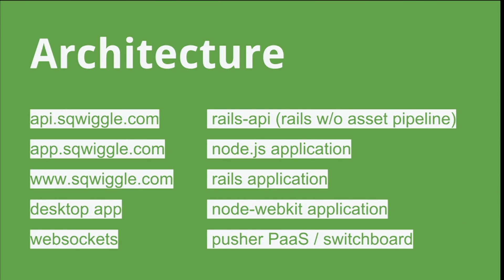We also have a desktop app. For that, we used a project called Node WebKit. Basically, it wraps a WebKit process and a Node process into one, so you can access Node functions from within a WebKit instance — you have a browser and you can access the file system — and then it puts that inside a cross-platform desktop application wrapper. So we have a desktop application that's actually running WebKit, and we can do native things like pause your music player when one of those instant video calls comes in, auto-updating, real desktop notifications — all that type of thing. Node WebKit's been a real lifesaver.